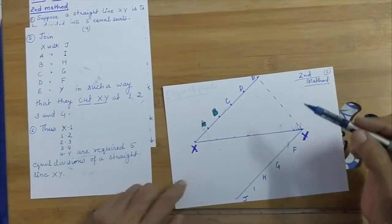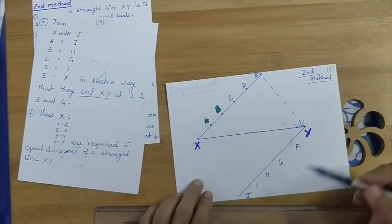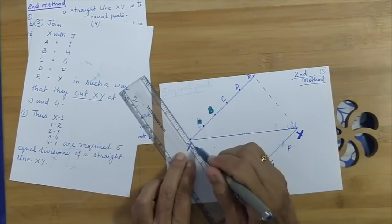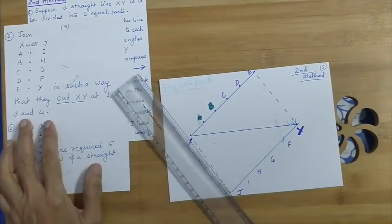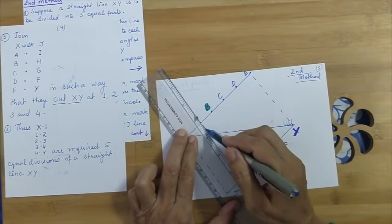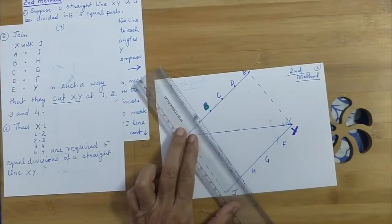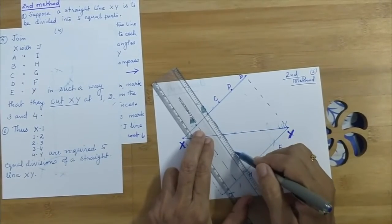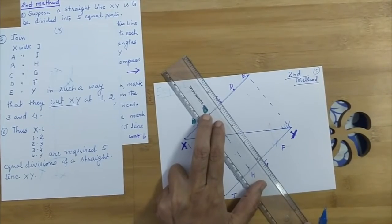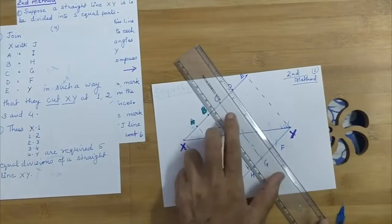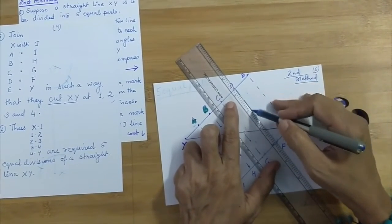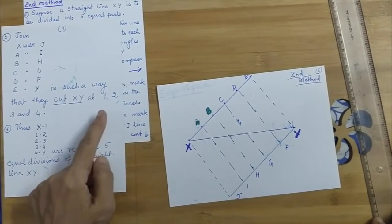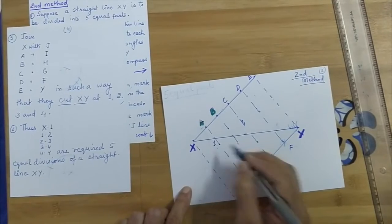Now join X with J, A with I, B with H, C with G, D with F, and E with Y in such a way that they cut XY at points 1, 2, 3, and 4.